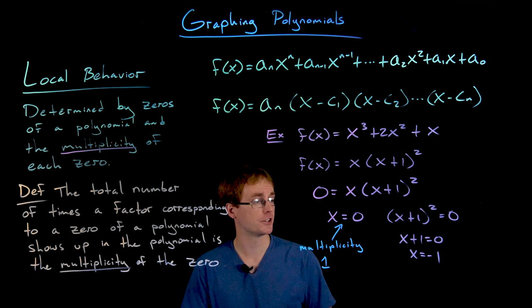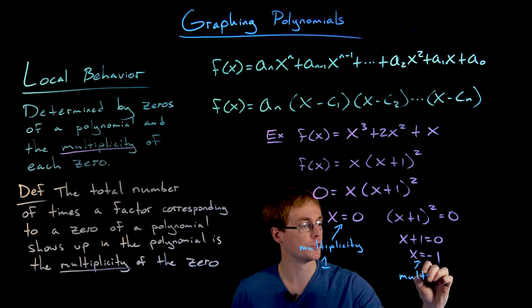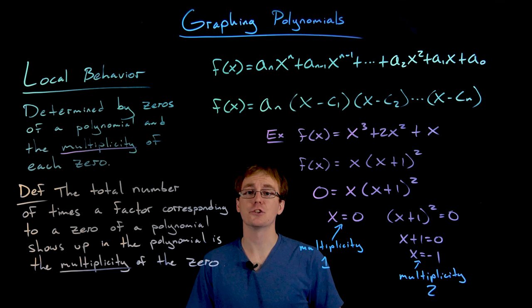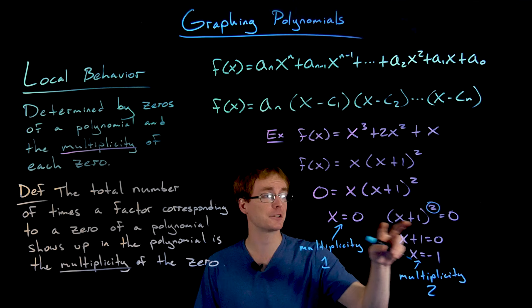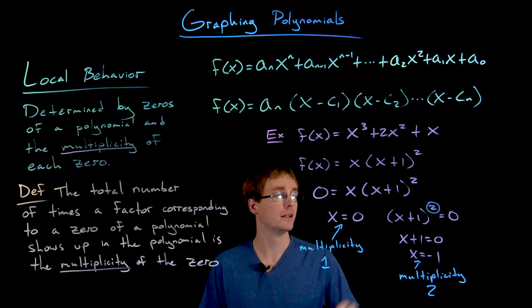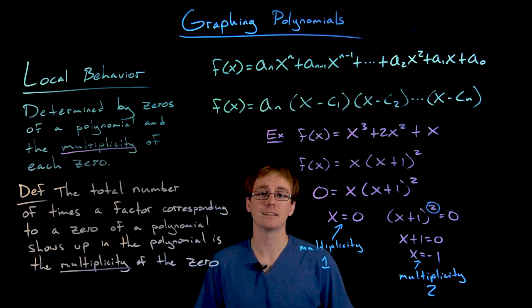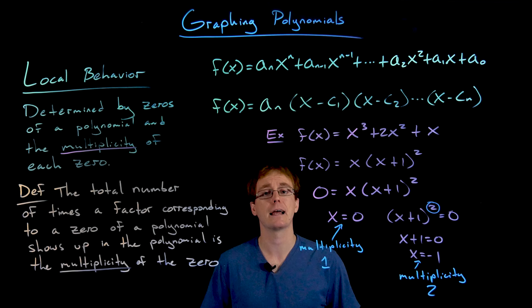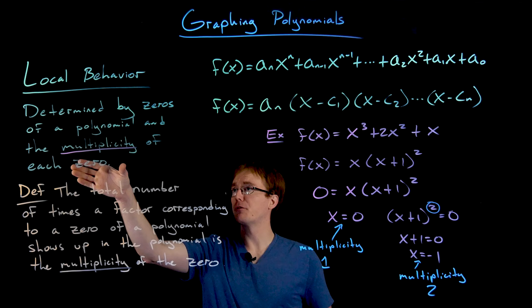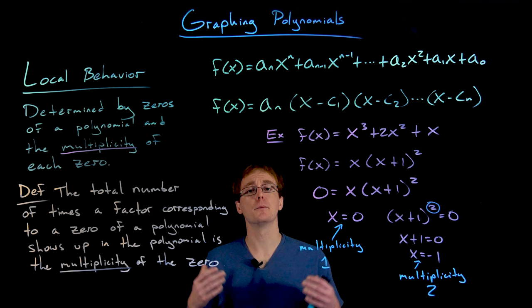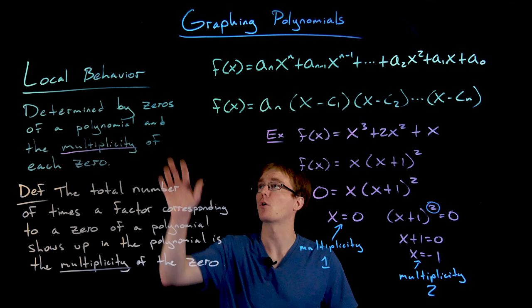Our second zero, at x equals negative 1, is a zero of multiplicity 2. The factor x plus 1 shows up twice because of that power of 2 — we could rewrite x plus 1 squared as x plus 1 times x plus 1 to see both factors clearly. The local behavior of a polynomial function is determined by these zeros and their multiplicities, and now we're ready to visualize the short-run behavior.